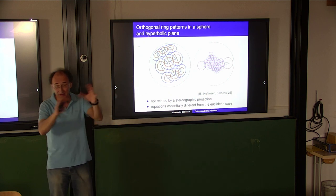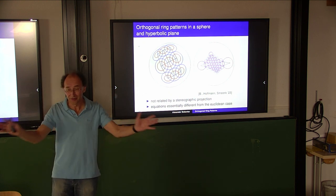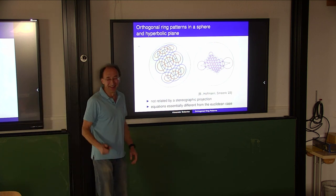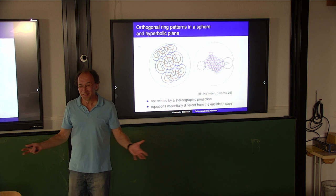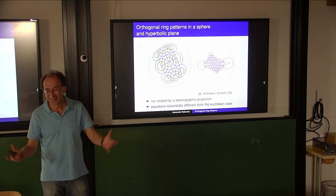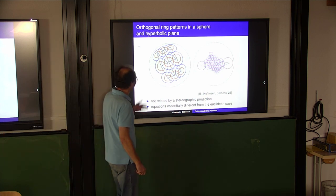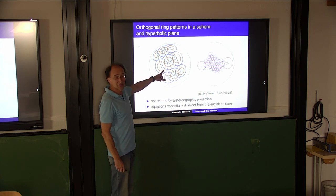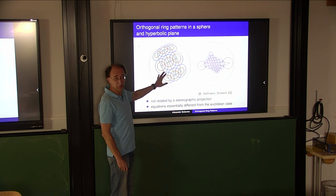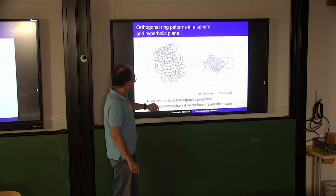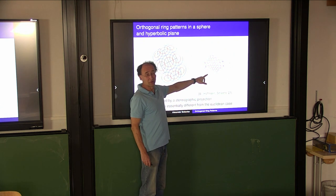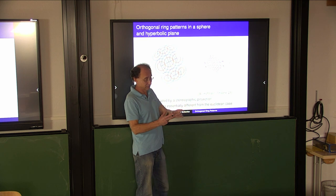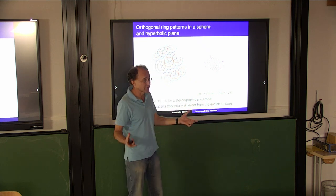Actually, essentially it will be a sphere - a round sphere, two-dimensional. It's as simple as a plane. On the round sphere you know what two concentric circles are. This is an orthogonal ring pattern on the sphere, defined exactly in the same way. Here you see a conformal model of hyperbolic space; circles are circles, and you can define concentric circles exactly in the same way.